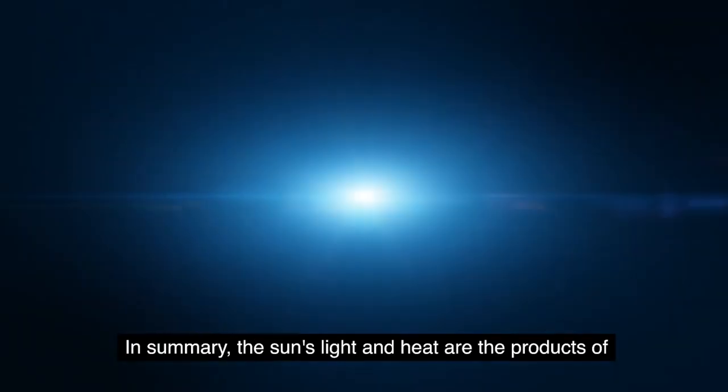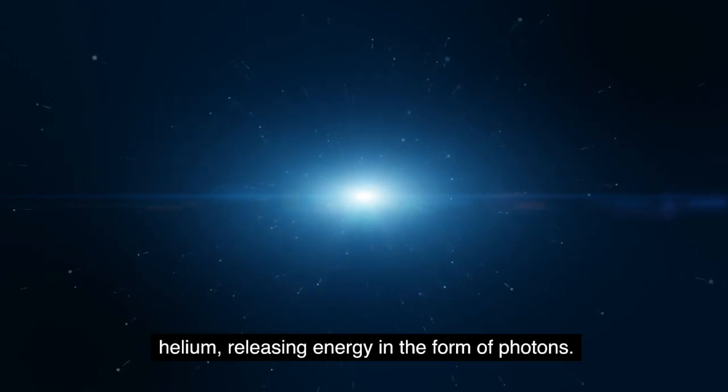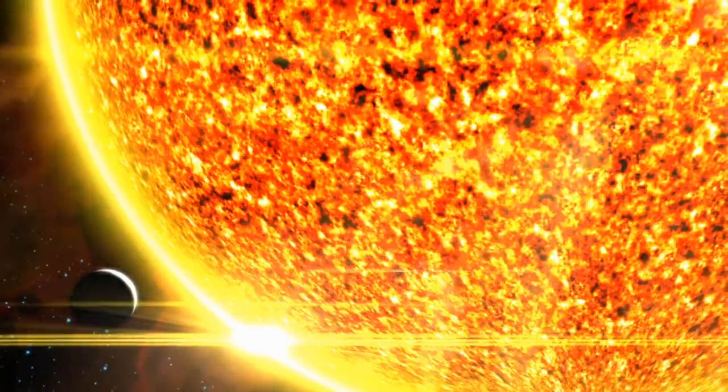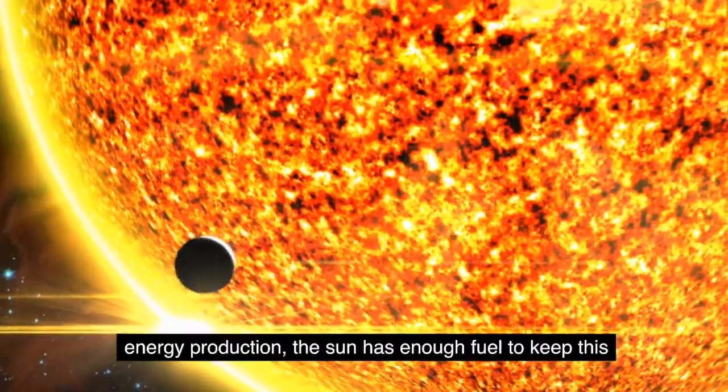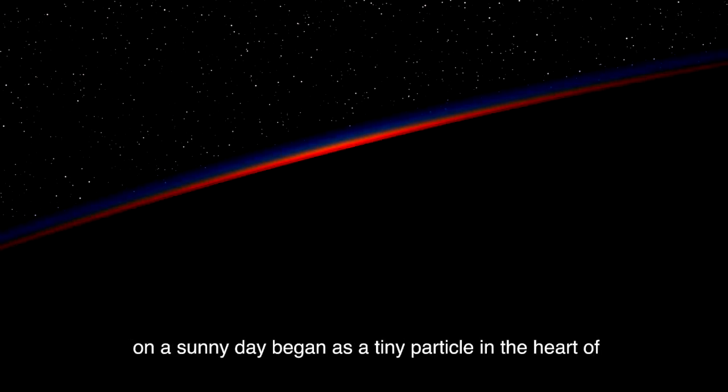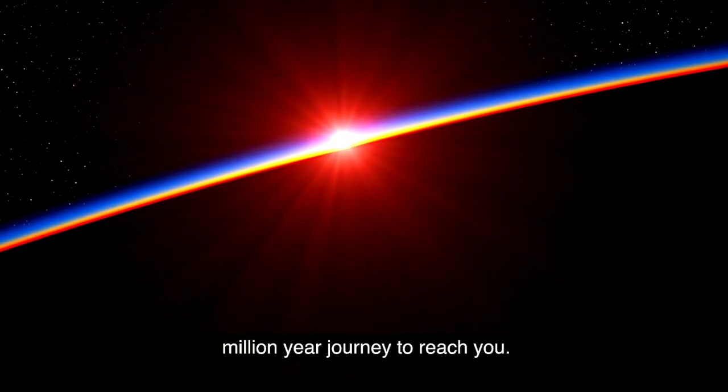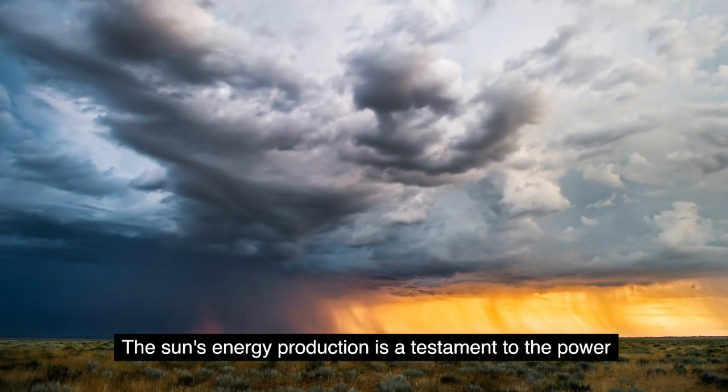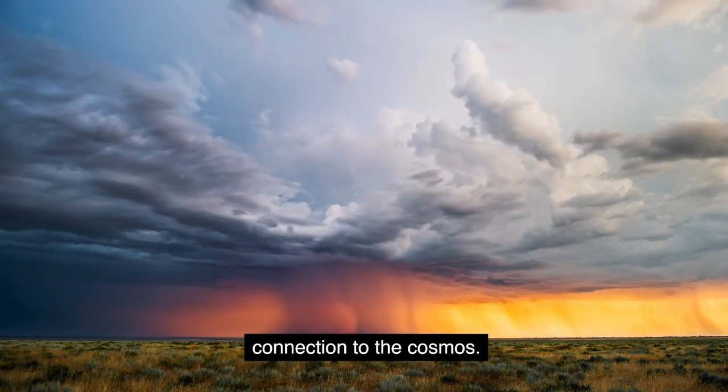In summary, the sun's light and heat are the products of nuclear fusion, where hydrogen atoms combine to form helium, releasing energy in the form of photons. These photons, after a long journey, reach the Earth's surface as the sunlight and warmth we experience every day. Despite its constant energy production, the sun has enough fuel to keep this process going for billions more years. Isn't it fascinating that the warmth you feel on your skin on a sunny day began as a tiny particle in the heart of the sun, embarking on a million-year journey to reach you? The sun's energy production is a testament to the power and wonder of the universe. A daily reminder of our connection to the cosmos.